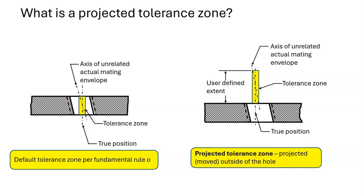Projected tolerance zones can be applied to orientation tolerances as well as position tolerances. We will use position tolerances in our examples.